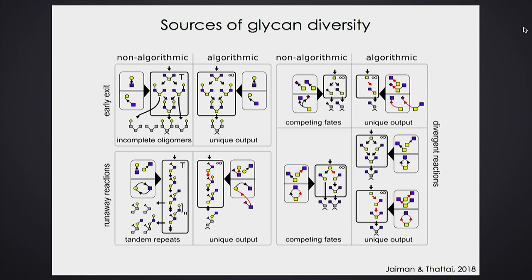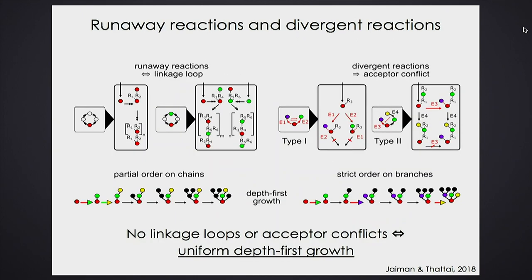It turns out it's very easy to diagnose whether you're going to have a runaway reaction. You might imagine that by using side branches cleverly you can cause the system to terminate at a particular size even with a polymerizing reaction — that's actually not true, because every time you add a new monomer it's a bare monomer with no branches, so it erases the memory of where it came from. A loop means there are two enzymes that can infinitely extend a branch given infinite time. The only way to remove those loops is to actually remove those enzymes.